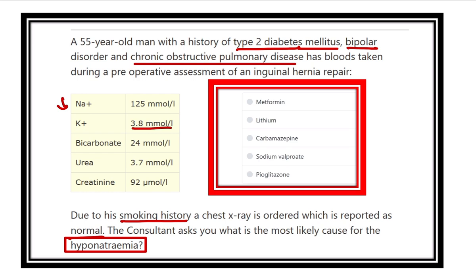We have to find out which drug can cause hyponatremia. The options are: metformin, lithium, carbamazepine, sodium valproate, and pioglitazone. We need to identify which one is responsible for the decreased sodium level.